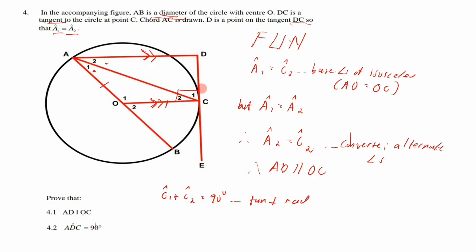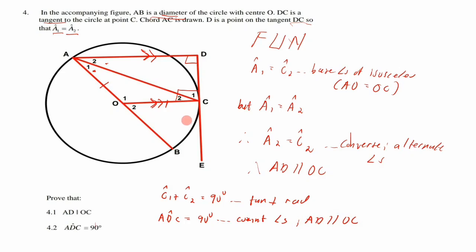Since AD is parallel to OC, angles C1 + C2 and angle D form co-interior angles, and we can see a U shape between the parallel lines. Co-interior angles are supplementary — if C1 + C2 = 90°, then angle ADC = 90°. Reason: co-interior angles, with AD parallel to OC. Proven.